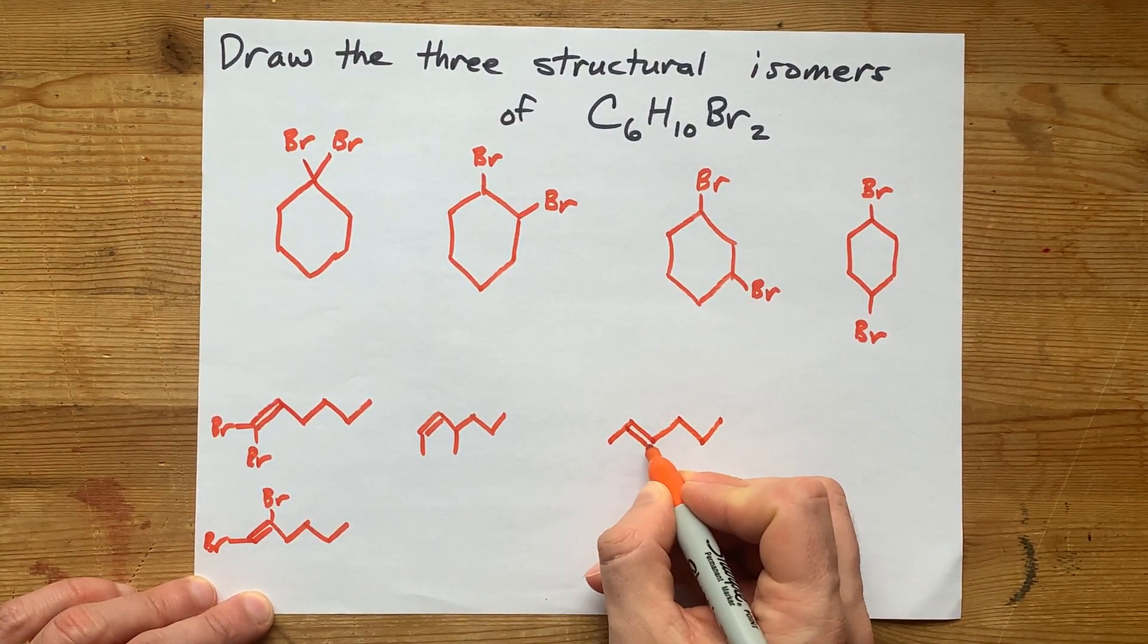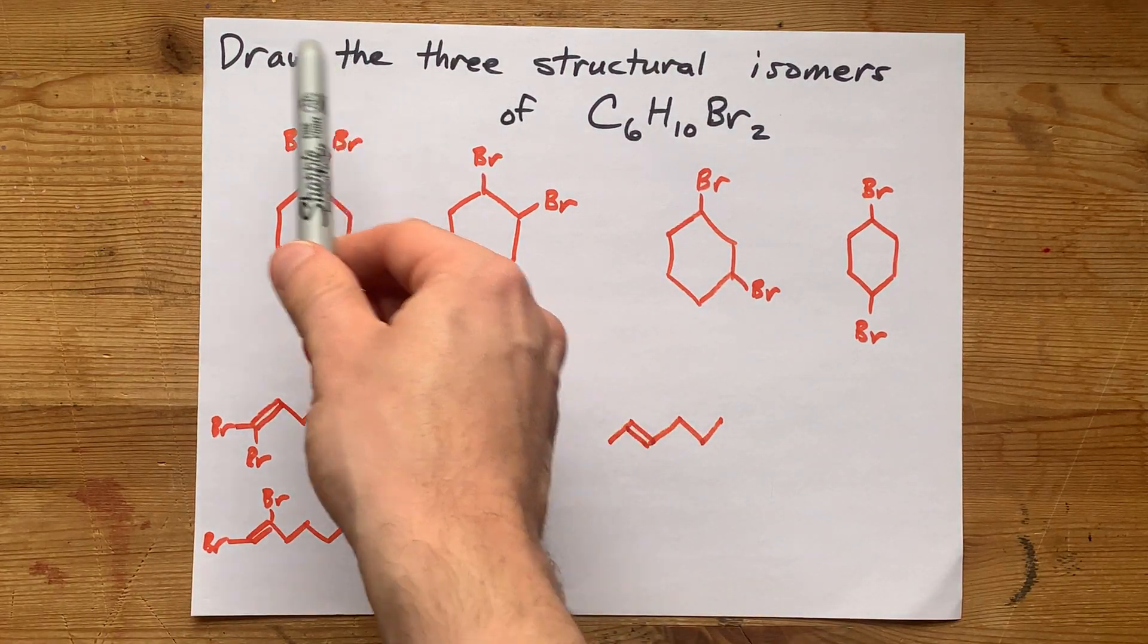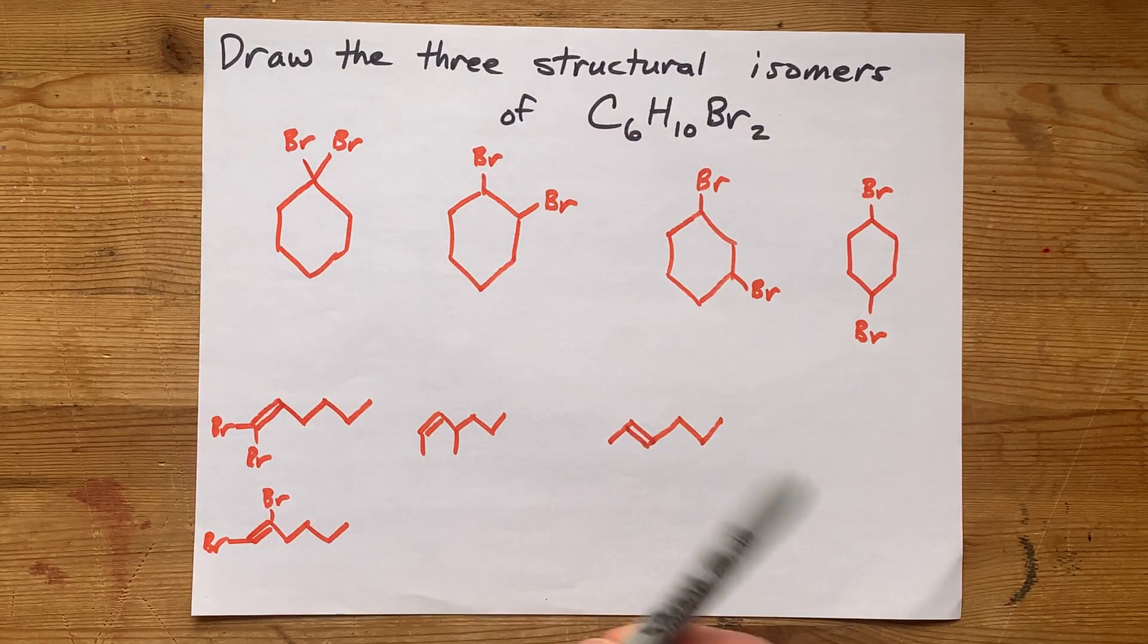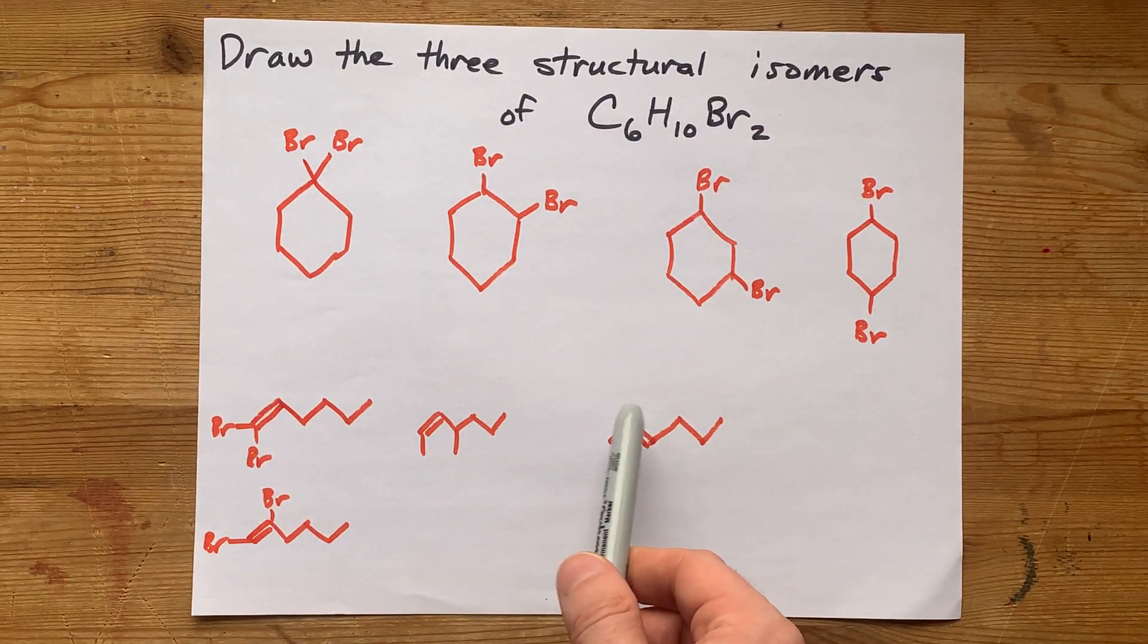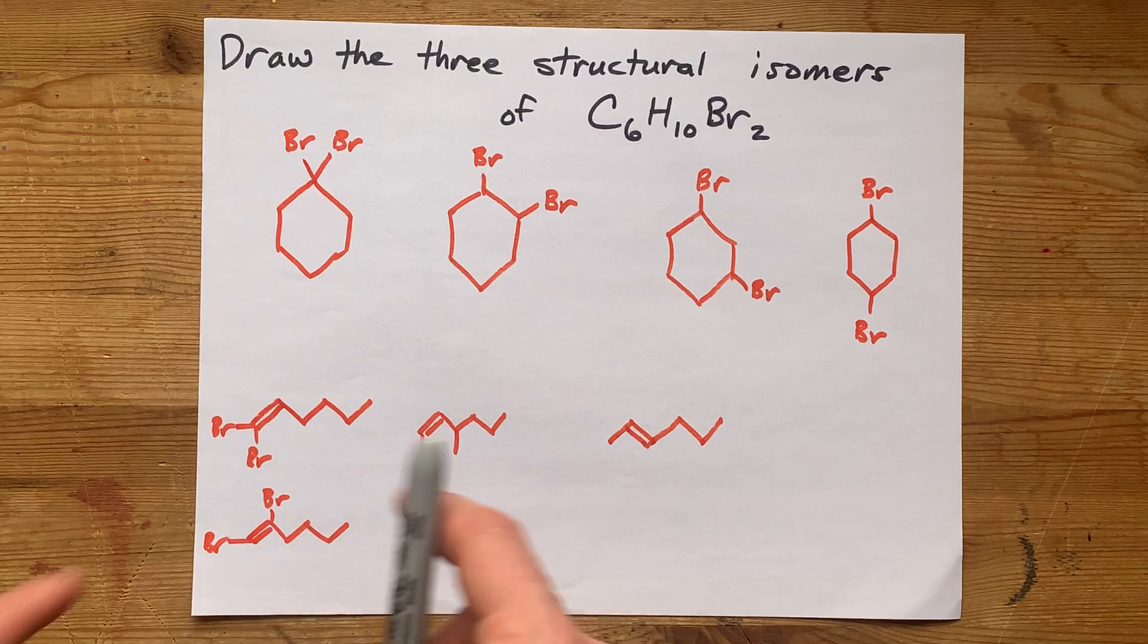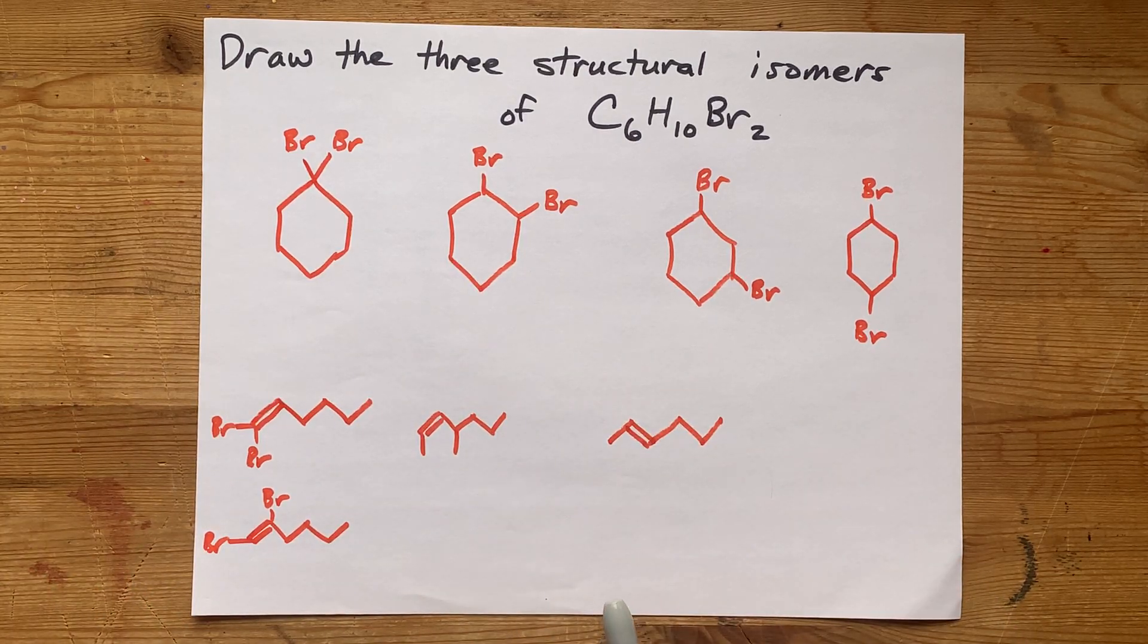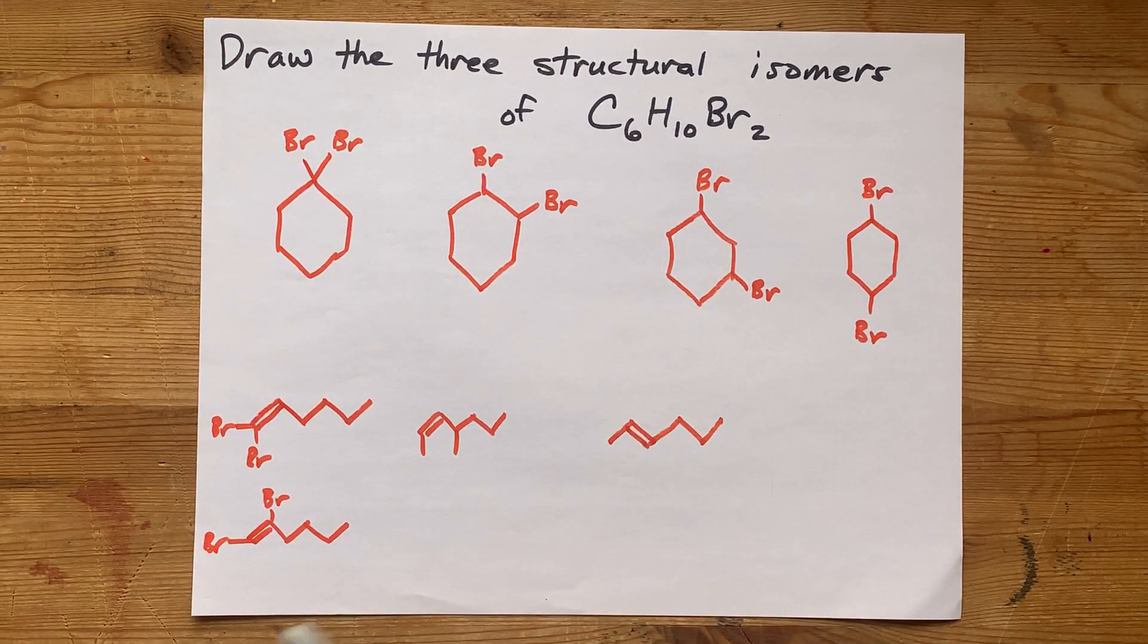I don't know how many structural isomers there actually are for this. If your teacher's asking you draw the three structural isomers, they're out to lunch. Here's a good place to get started. And if you really need more of these, you can generate more by moving the double bond around and moving the bromines around for each of those configurations. And if you really need all of them, drop something in the comments and I'll make you a new video. Thanks for being with me and best of luck.